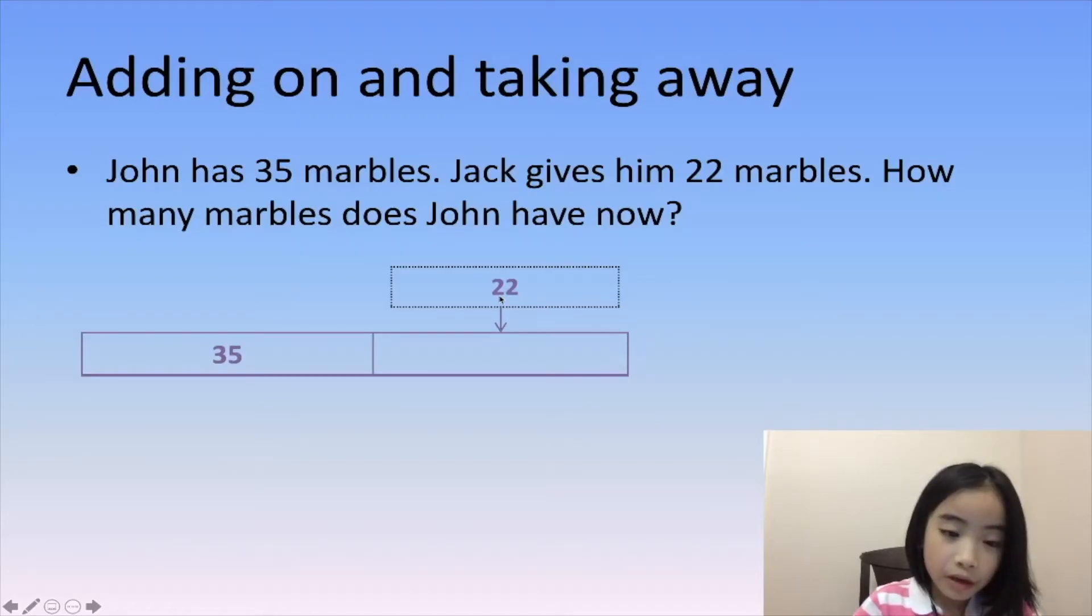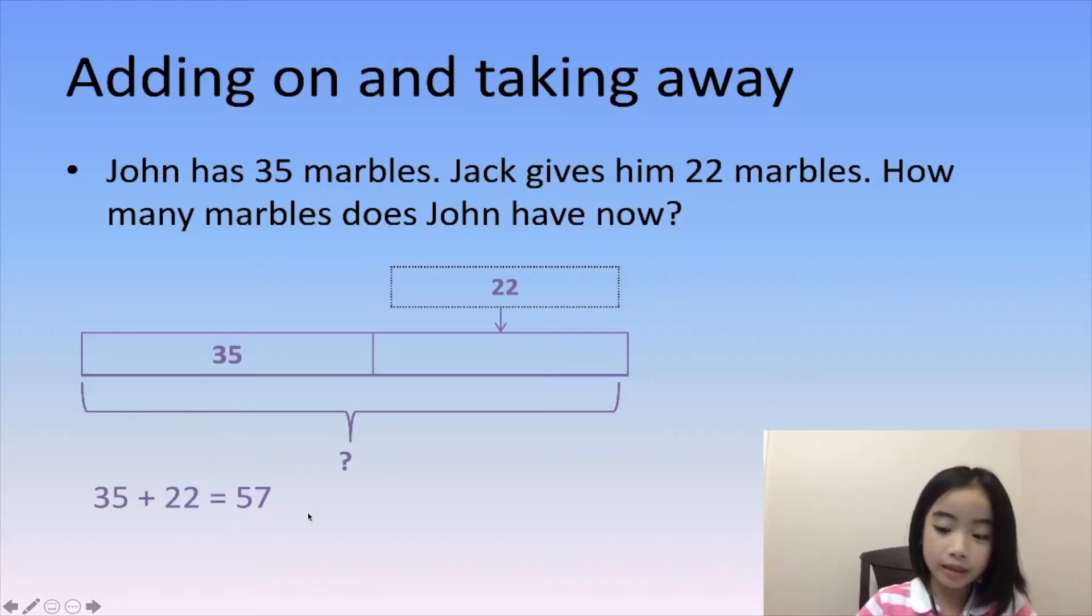This is an addition problem. 35 plus 22 equals 57. So, John has 57 marbles now.